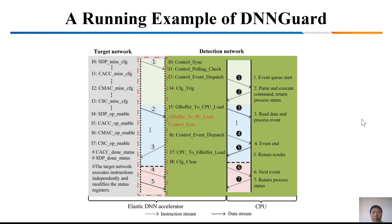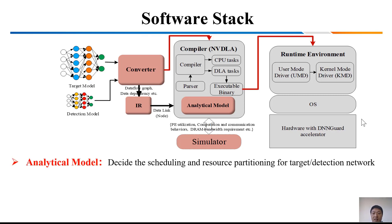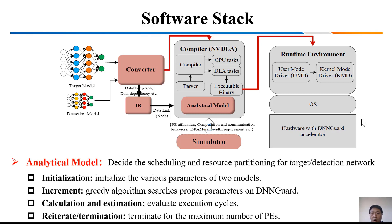Here is a typical example — you can check details in our paper. This slide shows the software stack of the DNN Guard accelerator. It's built on the NVDLA software stack. The green components are the original NVDLA software including its compiler and driver. The red components are newly added. The input includes two networks: a target network and a detect network. A converter generates the data flow graph and data dependencies of these two networks. This information, along with the two networks, is input to the compiler, which uses analytic models to generate hardware configuration parameters for scheduling and resource partitioning. A simulator is also introduced to provide heuristic information including PE utilization for each network.